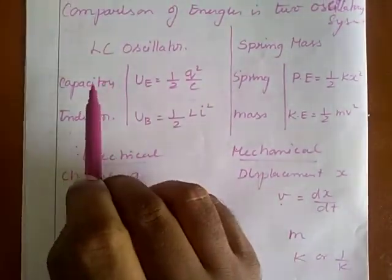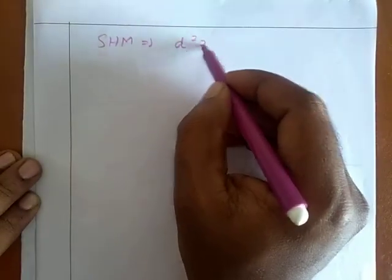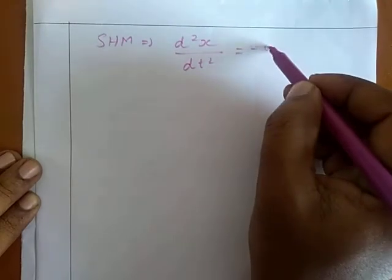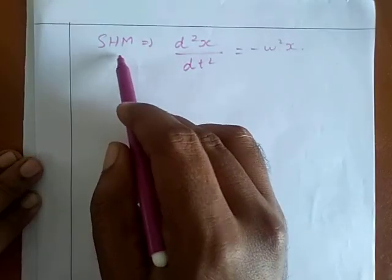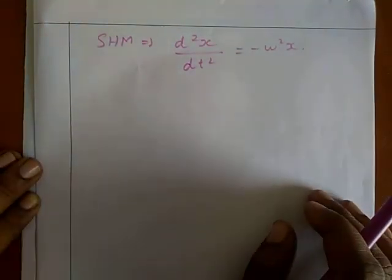Now let me check whether the LC oscillator system undergoes SHM or not. Let me take a qualitative approach to prove that the electrical oscillation system is SHM. In order to prove it is SHM, we need to satisfy the relation d²x/dt² = −ω²x. If this relation is satisfied, then the electrical oscillation is simple harmonic motion.